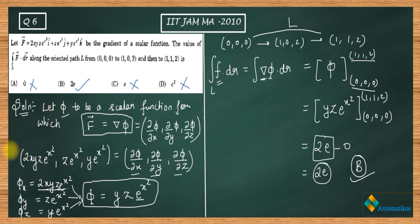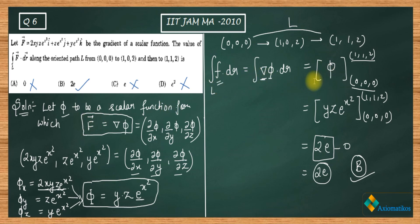Two major things used here: first, if f vector equals del phi, then f is called a conservative vector field. Second, if f is conservative, the line integral depends only upon the initial and final points, not on the path. So f dot dr equals del phi dot dr, the integral gives phi, and placing the endpoint values gives 2e.